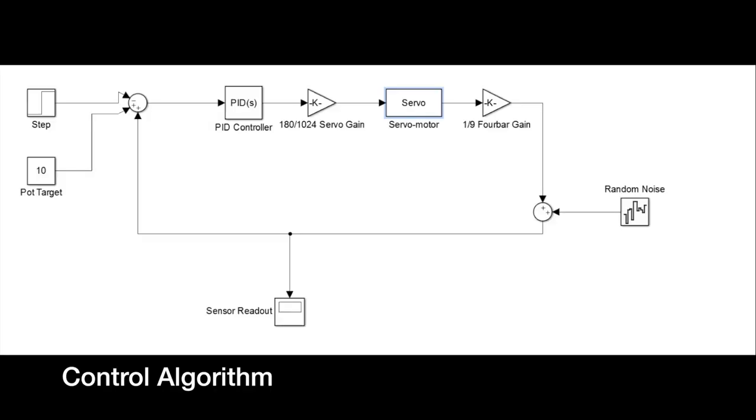Here you can see the block diagram for our system. The step function simulates the input from the ball. Target is where the location along the beam is brought in via the potentiometer, and then these two are added together using our feedback loop.